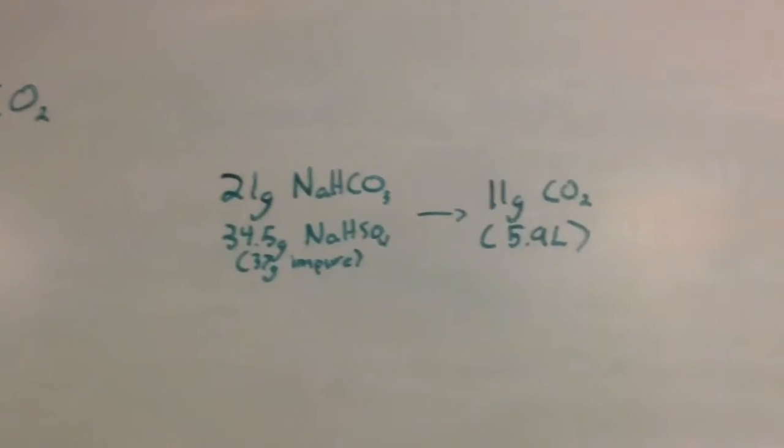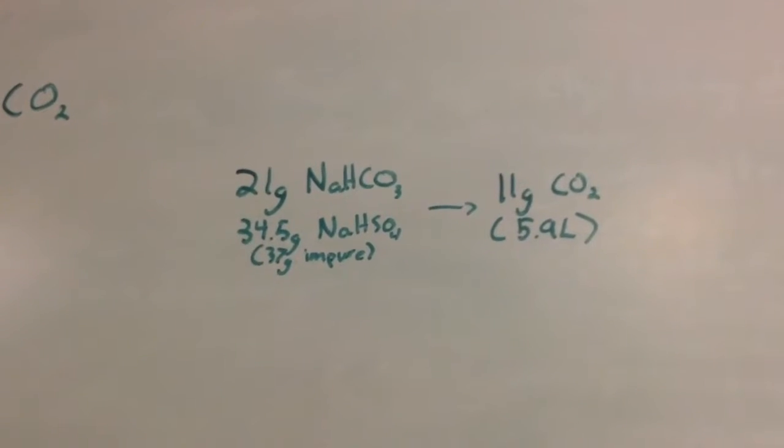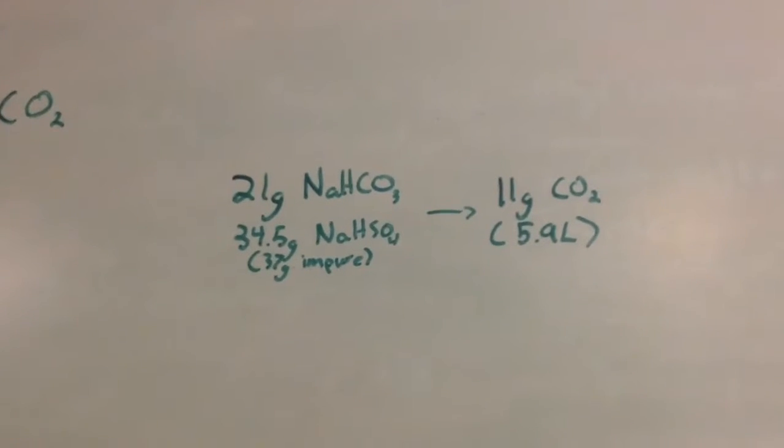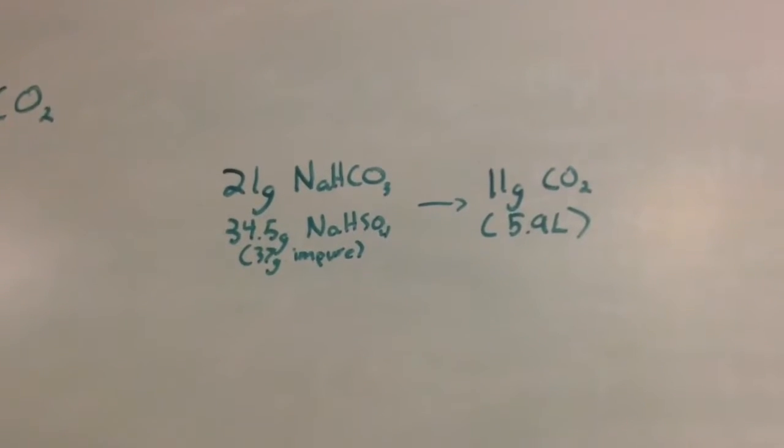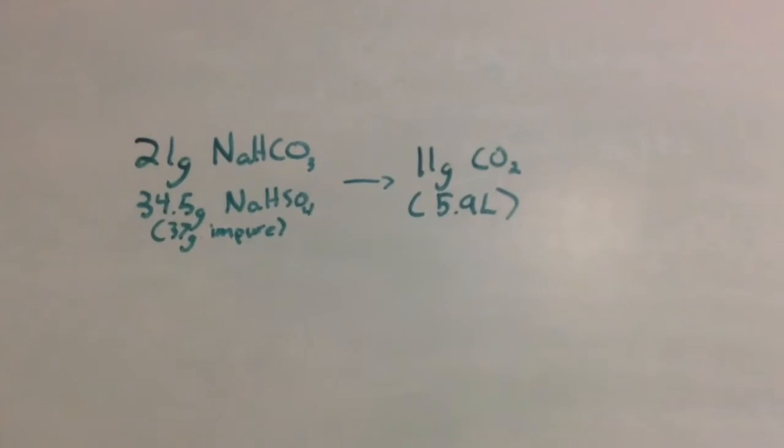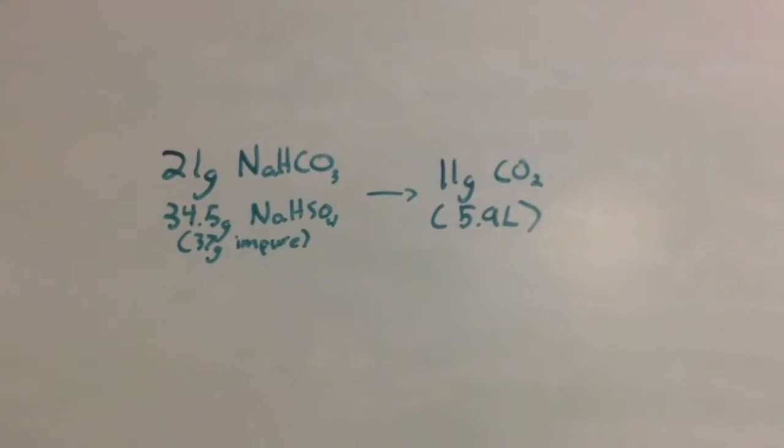For a 0.25 molar scale, I only need 21 grams of sodium bicarbonate and 34.5 grams of sodium bisulfate. The sodium bicarbonate I have is impure, so I will need 37 grams of this. This scale will produce 0.25 moles of carbon dioxide, which is 11 grams, and approximately 5.9 liters of gas.